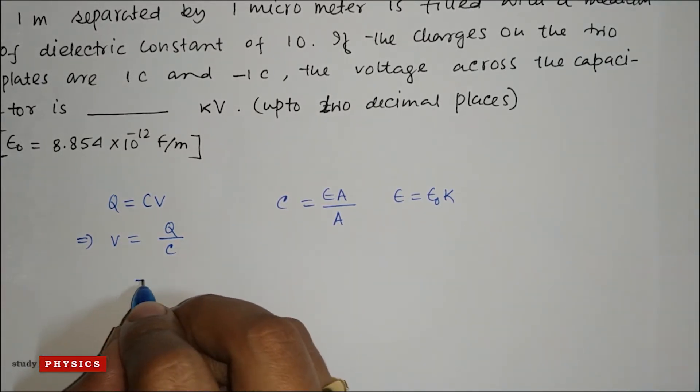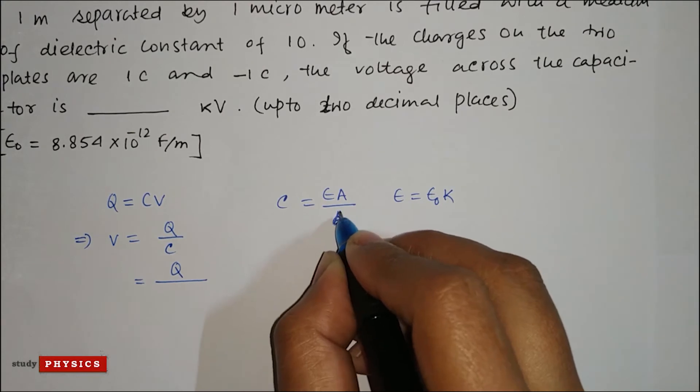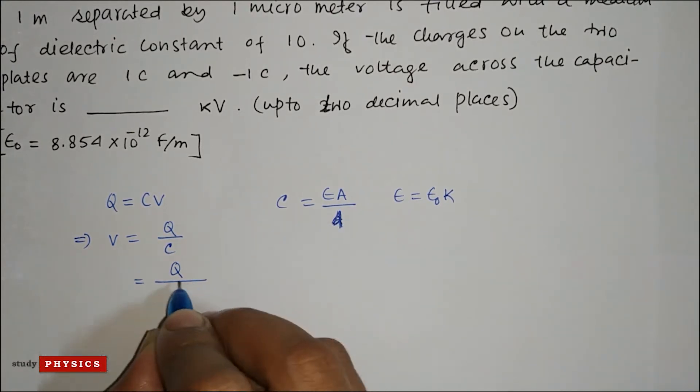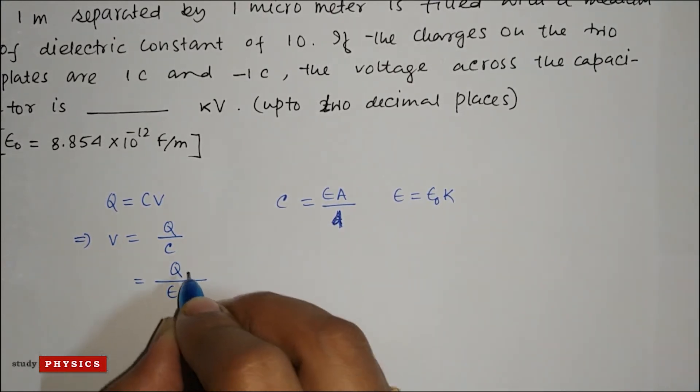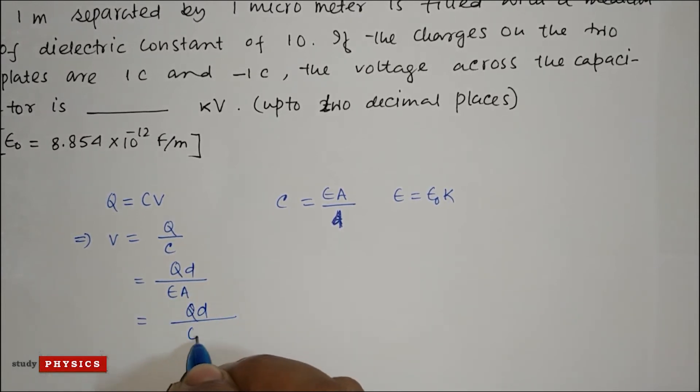So just put these values. That means Q divided by... sorry, this is d. Okay, so epsilon A divided by d. That means V equals Qd divided by epsilon naught KA.